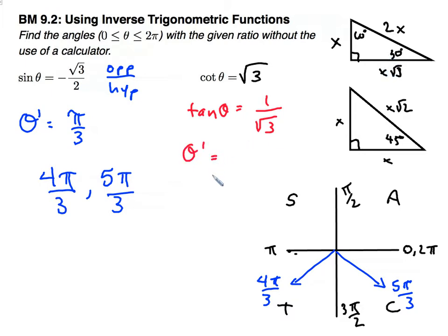So I'm going to find my reference angle theta. And opposite x and x square root 3 for adjacent. That's my 30 degrees. So 30 degrees or pi over 6 in radians.